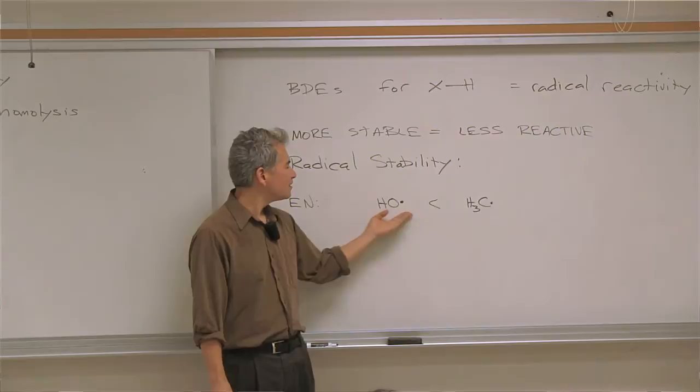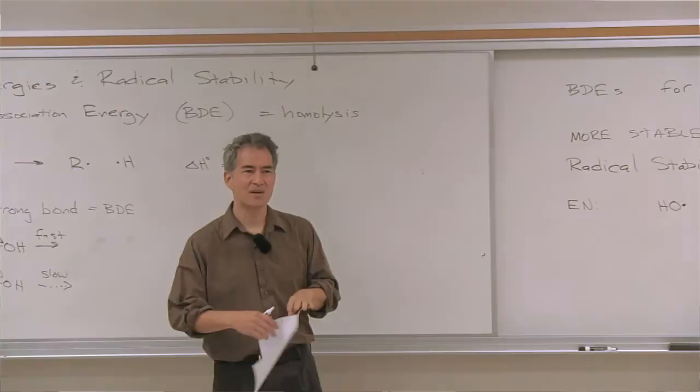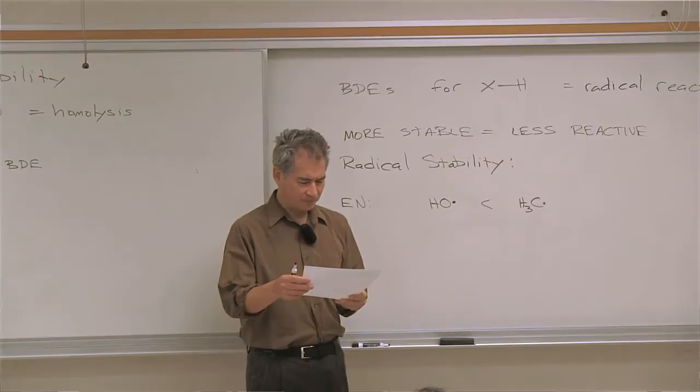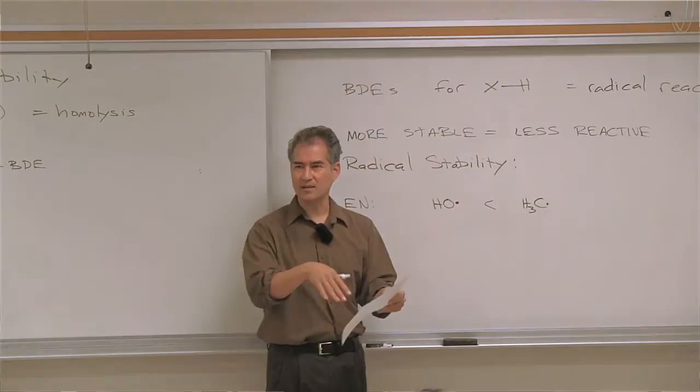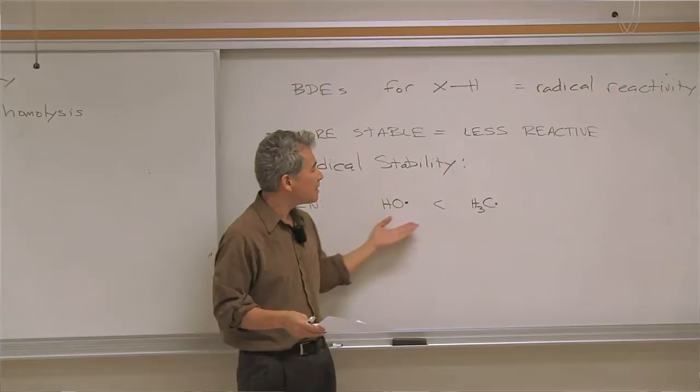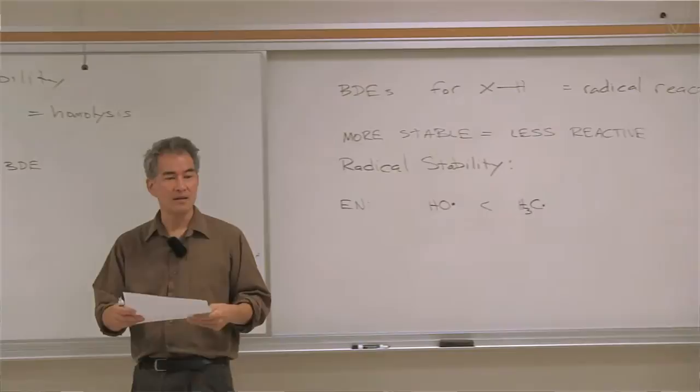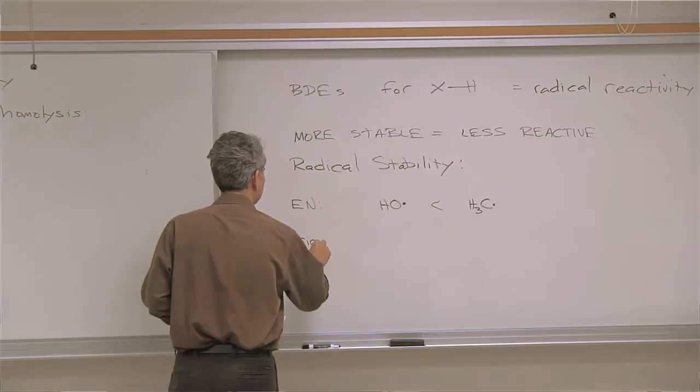In fact, looking at the bond dissociation energies in the table in the online notes, it's about 10 orders of magnitude — 10 to the 10th — more stable to have a radical on carbon versus a radical on oxygen. You're not going to see hydroxyl radicals floating around in your reaction mixture unless you have gamma-ray sources or something generating them. The difference is phenomenal.